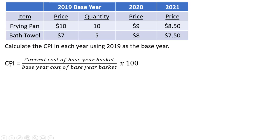To calculate the consumer price index in a given year, we're going to look at the current cost of the base year basket. In this case, our base year basket consists of 10 frying pans and 5 bath towels. And then we're going to divide that by the base year cost of the base year basket.